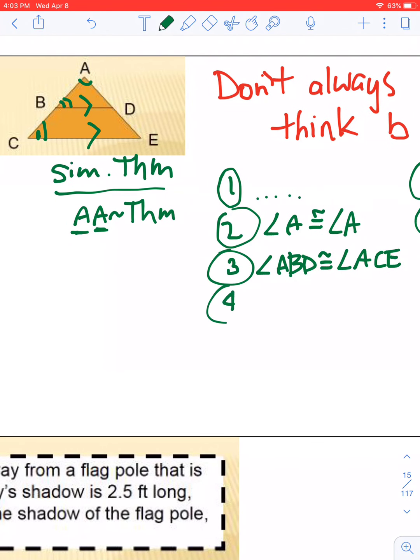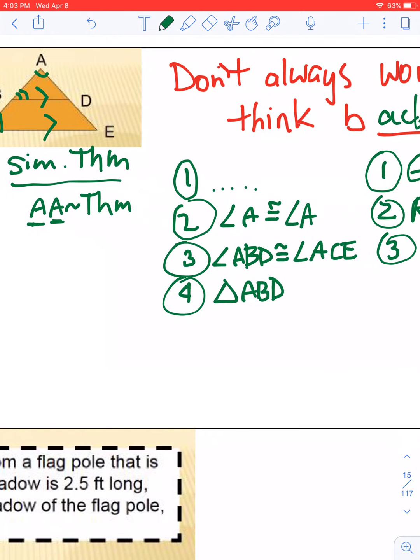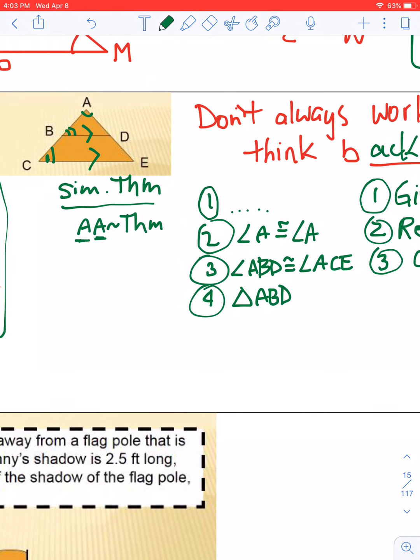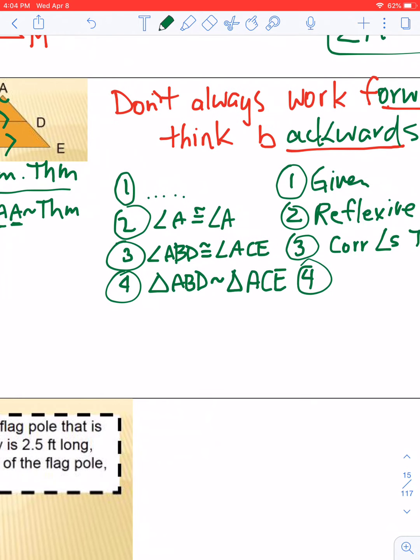Line four. Those two triangles. A, B, D. Now be careful. Here's—I'm going to slow down because there's a lot of kids that make a mistake and they put congruent. These are not congruent. These are similar to A, C, E.